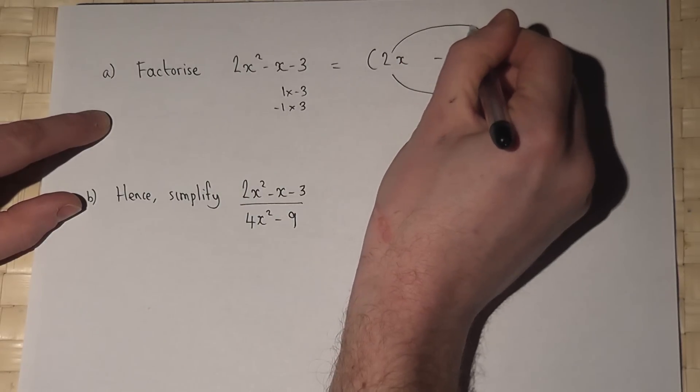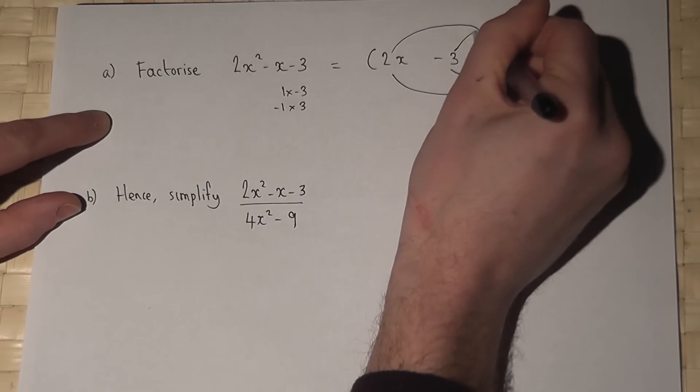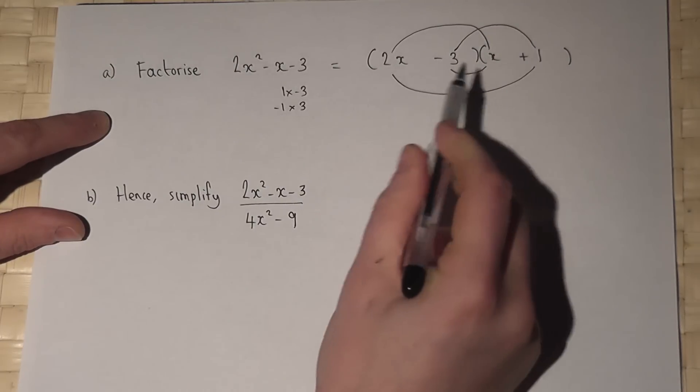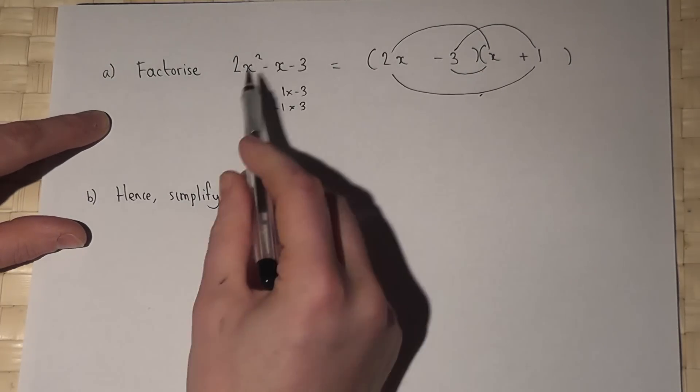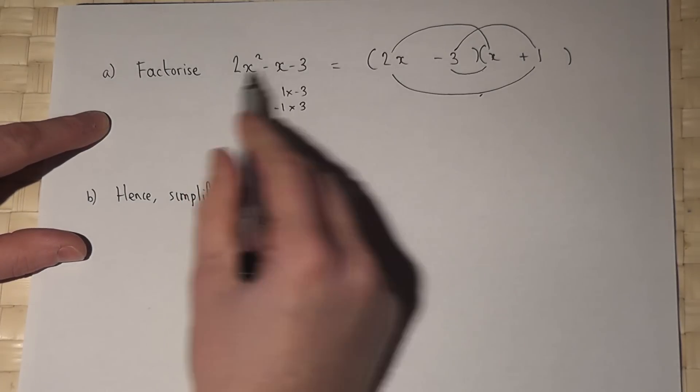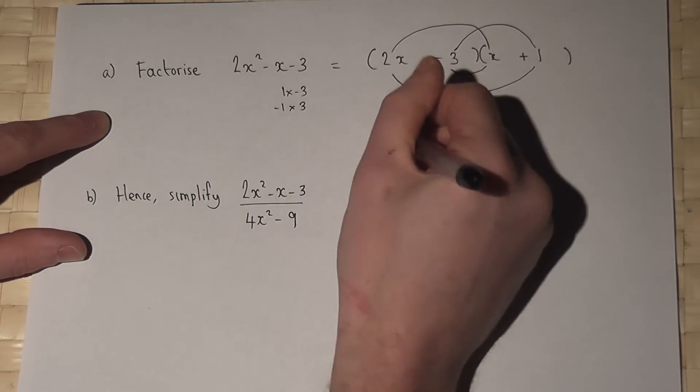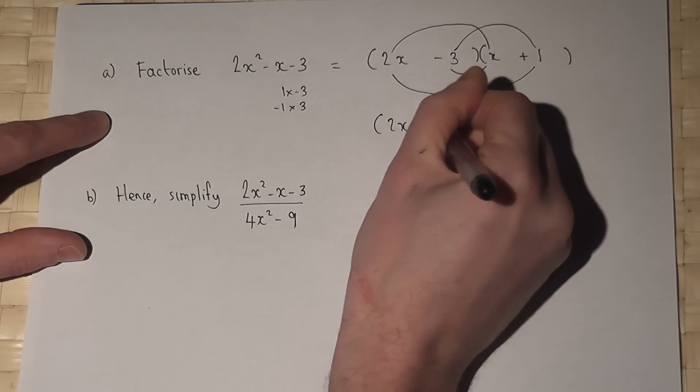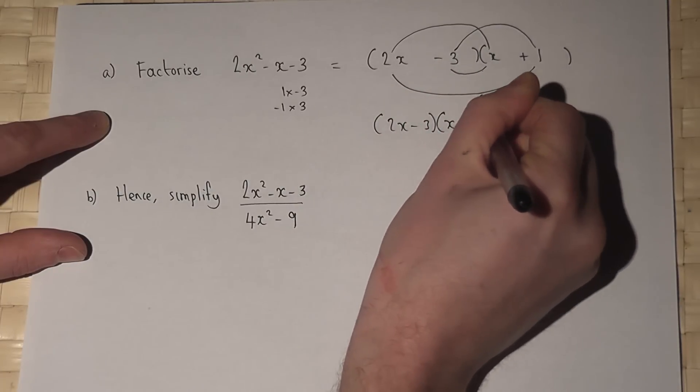This of course gave me 2x squared and this gave me a minus 3. So this is the correct form which expands back to the given expression. So therefore, factorize this, this is the answer: 2x minus 3 times x plus 1.